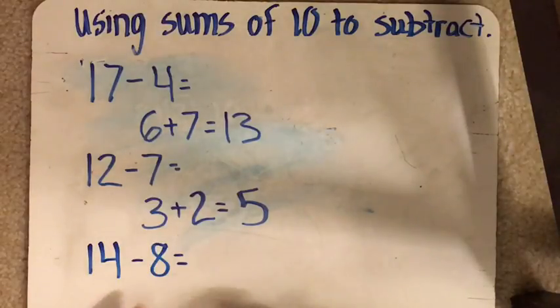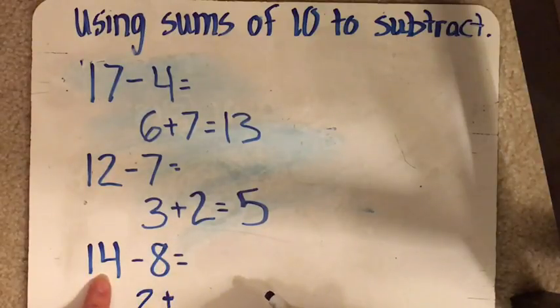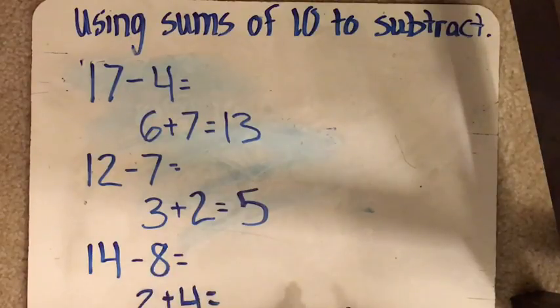Now let's do 14 minus 8. So again, 8 plus 2 will get you to 10. And then you have 4 more. So 2 plus 4 equals 6. So even though this seems like I'm writing it out, again, this will be all mental. And you can work on doing this in your head.